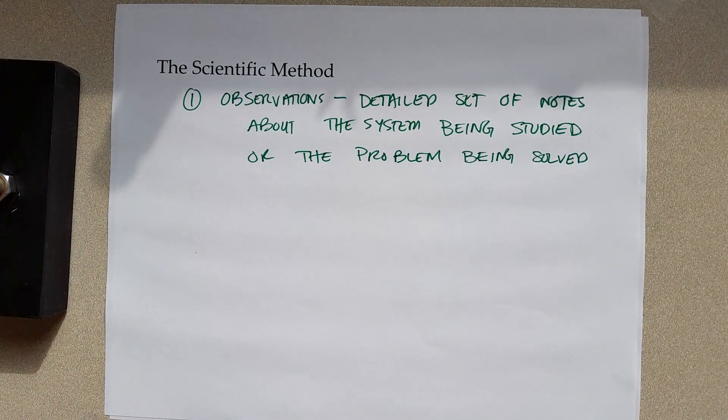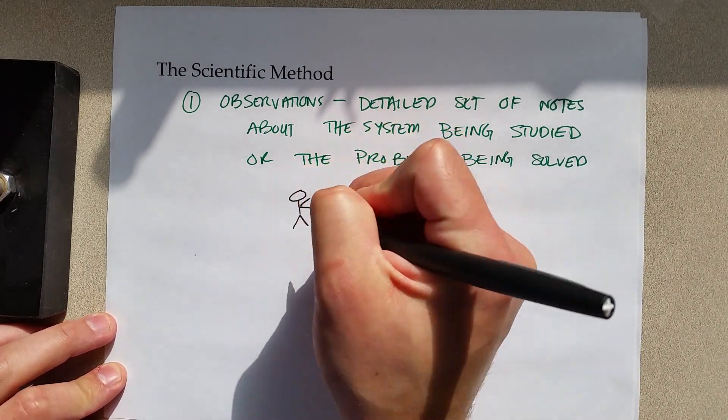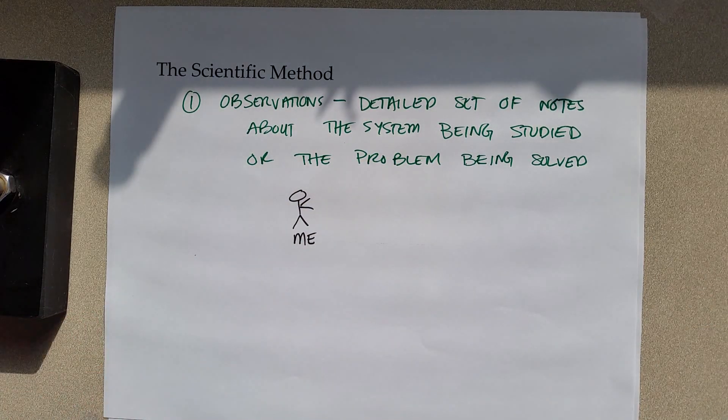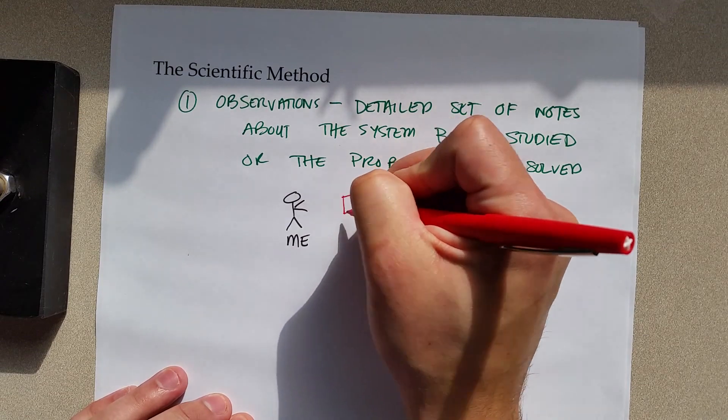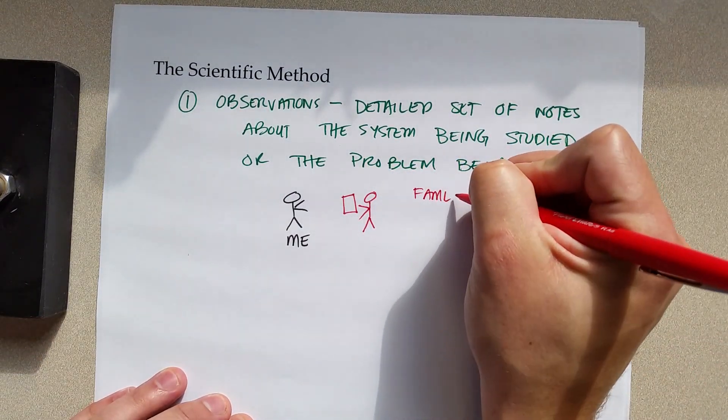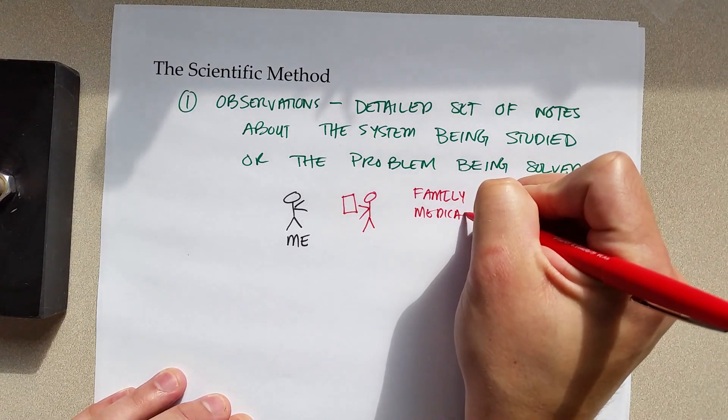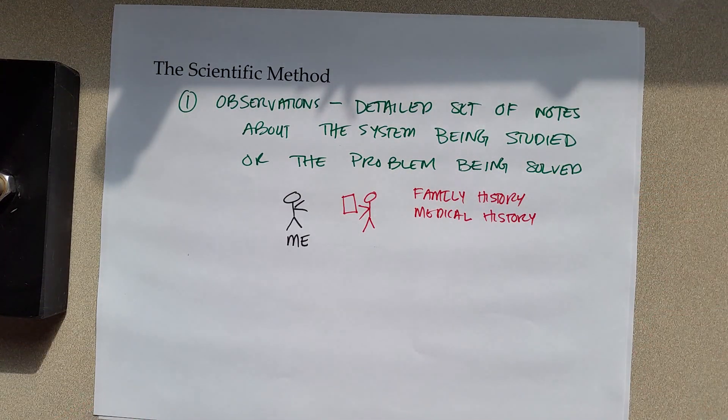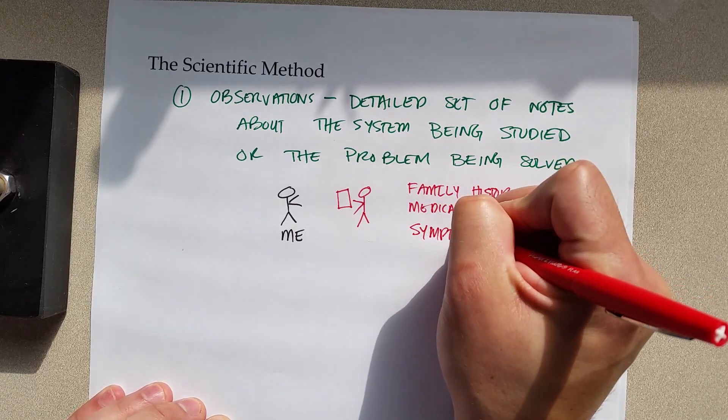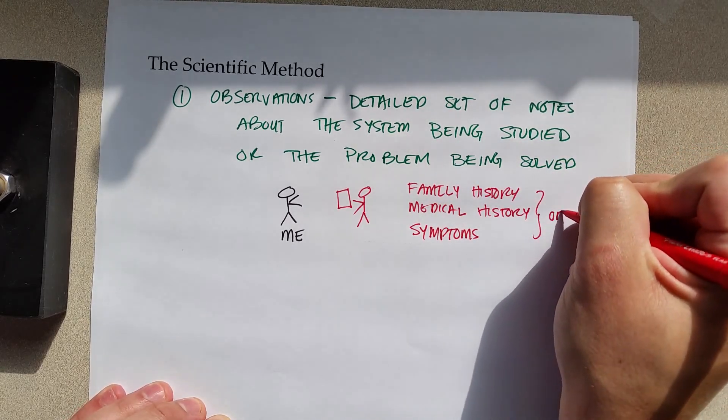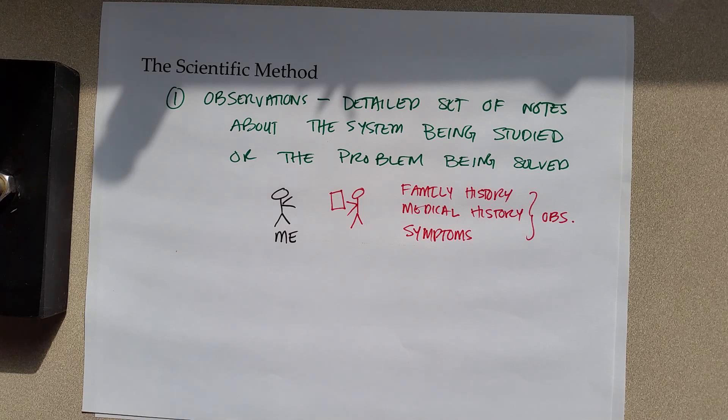One good example of the scientific method would be if someone were sick. So say I am not feeling good. I would go see my doctor. The first thing she's going to do is start asking me questions. She would ask me questions about my family history, my medical history, especially if this is the first time I saw her. And then, to try to solve the problem of me being sick, she would ask me about my symptoms. These are all observations. They're going to help her figure out what's wrong with me and also to solve the problem.